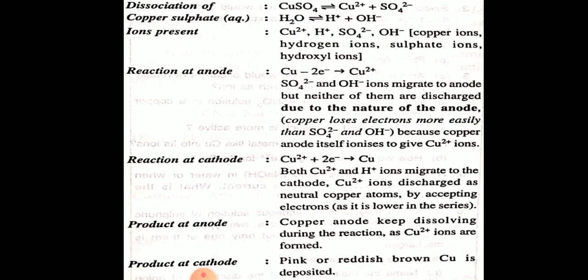Both Cu²⁺ and H⁺ migrate towards the cathode, but Cu²⁺ gains electrons at the cathode and is converted into copper metal. At the anode, both SO₄²⁻ and OH⁻ migrate, but neither is discharged. This is due to the nature of the anode: copper loses electrons more easily than sulfate and OH⁻, so the copper anode itself ionizes to give Cu²⁺ ions.